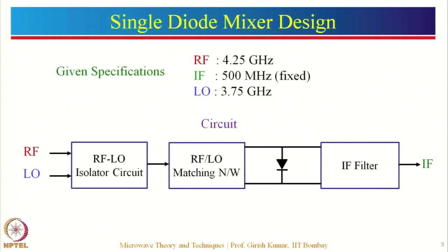In this example, we are going to use a diode as the mixing device, and the circuit chosen is a simple single diode mixer. The specifications are: RF frequency at 4.25 gigahertz, desired IF at 500 megahertz which is 0.5 gigahertz, and the LO which is local oscillator frequency chosen is 3.75 gigahertz. The circuit has an RF-LO isolator circuit to isolate the RF and LO ports, then a matching circuit, the mixing device, and an IF filter. The mixing device is a Schottky diode, part number BAT 1503W, an Infineon diode in chip form which can be used in microstrip design.